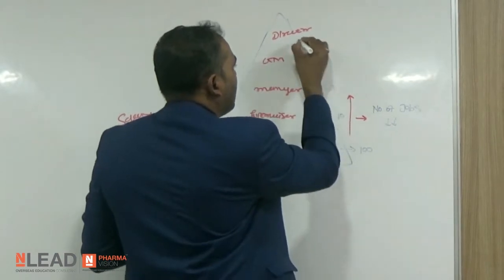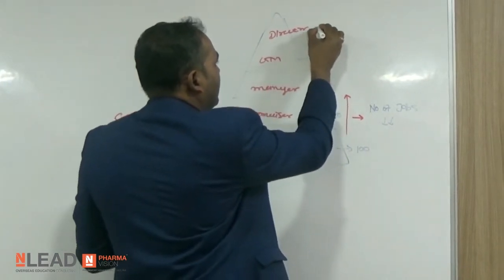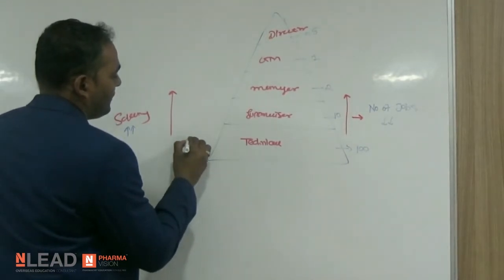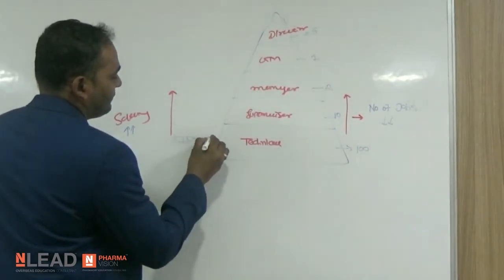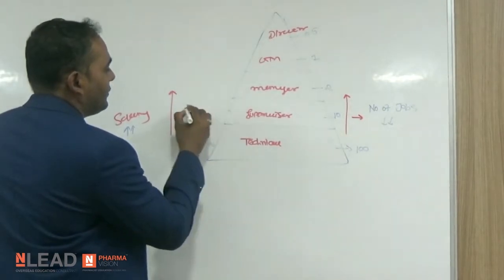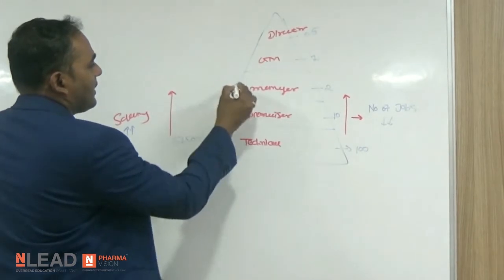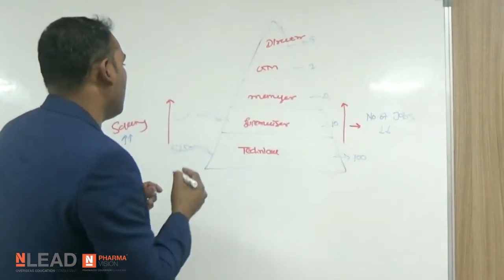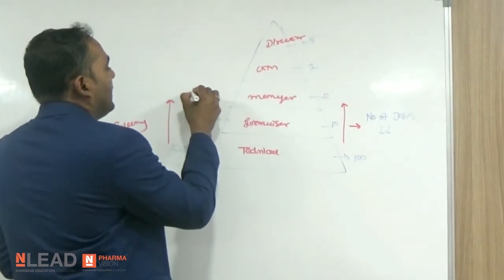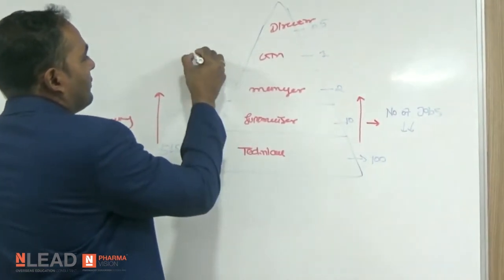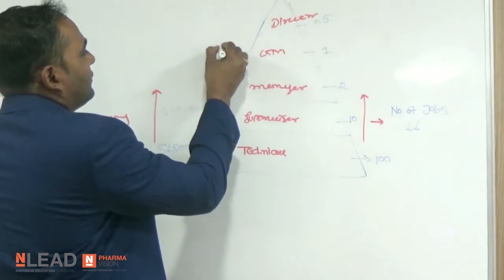At the technician level, you might earn $45,000 per year. At the supervisor level, $60,000 per year. Around $100,000 to $150,000 per year at the manager level, and $200,000 at higher levels.